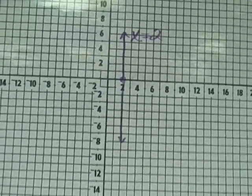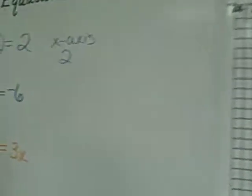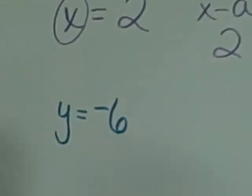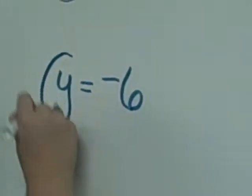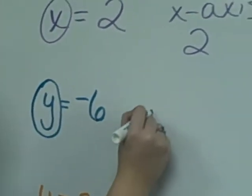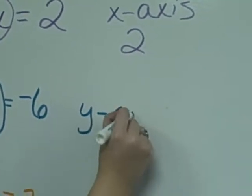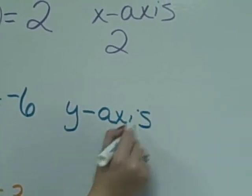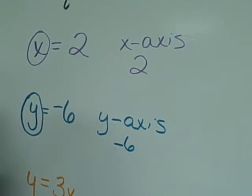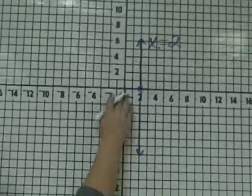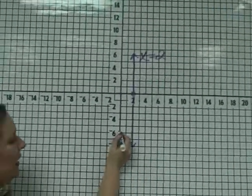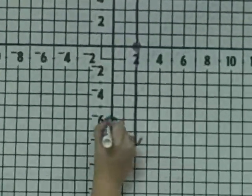Our next equation is y equals negative 6. For this equation, we are going to go to the y-axis and go to the number negative 6. So follow me back over to our graph. We're going to go to the y-axis, or the one that moves vertically. And at the negative 6, we're going to place a large dot.